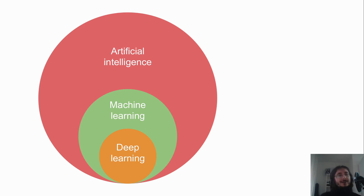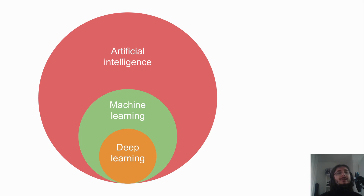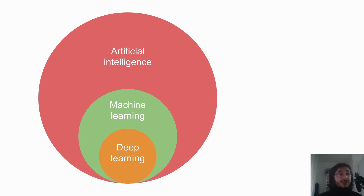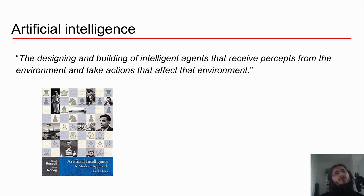So AI is the big thing. Machine learning is one technique or one series of algorithms used inside the AI field, which is bigger than machine learning. And then deep learning is one subset of machine learning. But how do we define artificial intelligence?